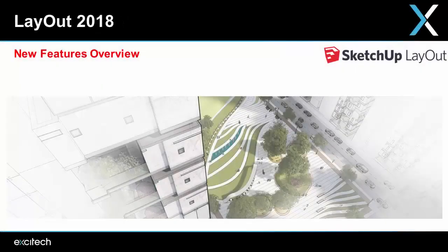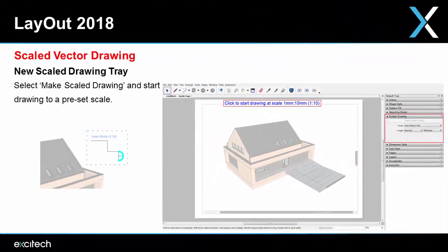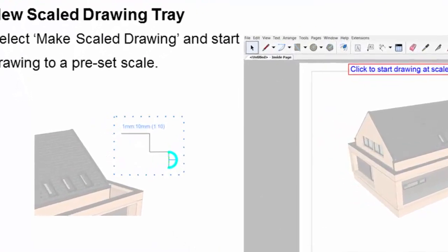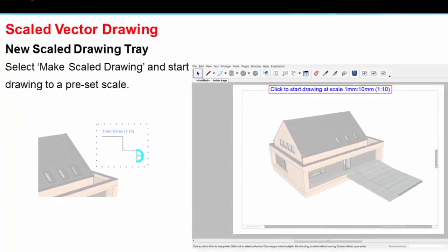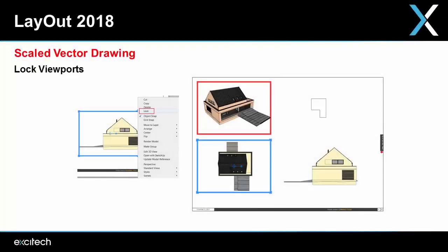Next up, the new features for Layout 2018. First is the new scaled drawing tray, which allows you to use your SketchUp model as a base to accurately scale construction details, or sketch a detail from scratch at a preset scale. New details are created inside a group, and you can hide the rest of your document — the same as in SketchUp. You can also easily lock individual entities in Layout, such as viewports, to stop you from accidentally selecting them.